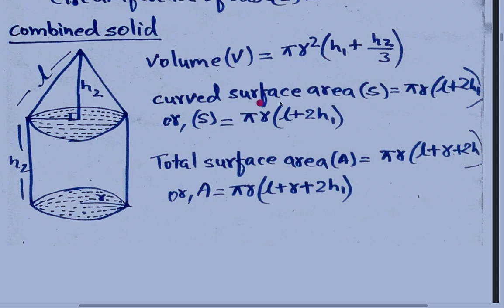Now the curved surface area S is equal to π R L + 2π R H1, where H1 is the height of the cone. Now the curved surface area formula is as follows.